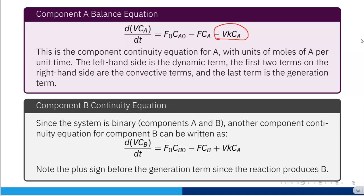Similarly, we can develop the component B continuity equation: d(V·CB)/dt = F0·CB0 − F·CB + V·K·CA. Here actual generation is happening, so the reaction term carries a plus sign because B is being produced. Since −RA = RB = K·CA, we take the plus sign before the generation term. We now have two component equations because the reaction is A to B, and if conversion is not 100%, both reactant A and product B will be present.